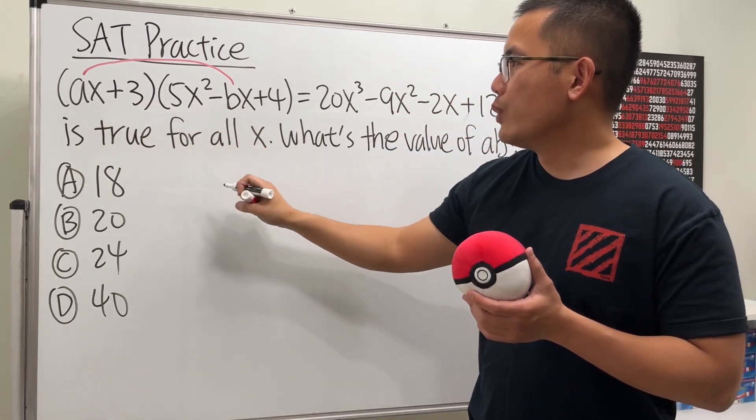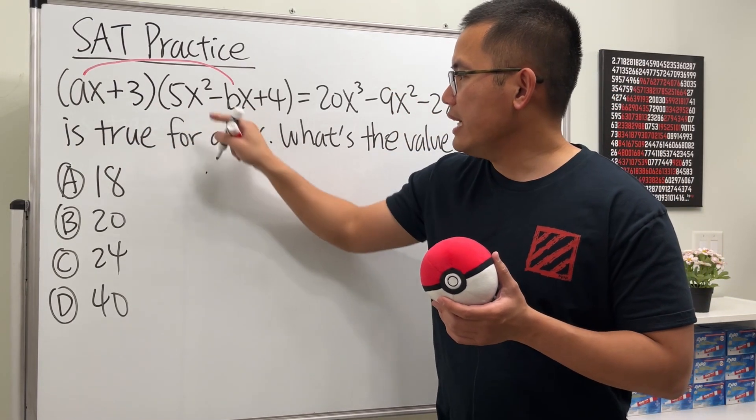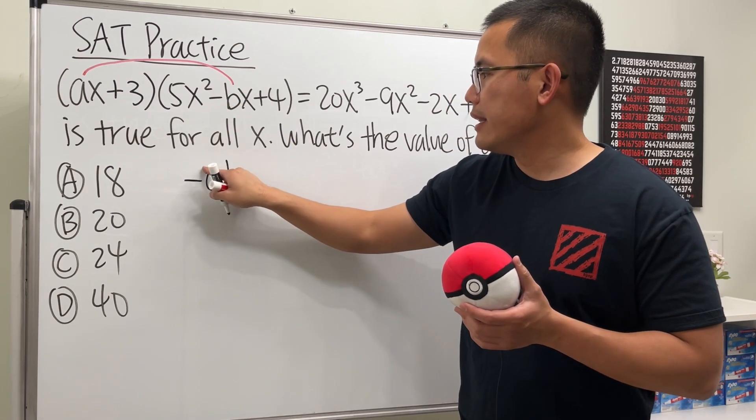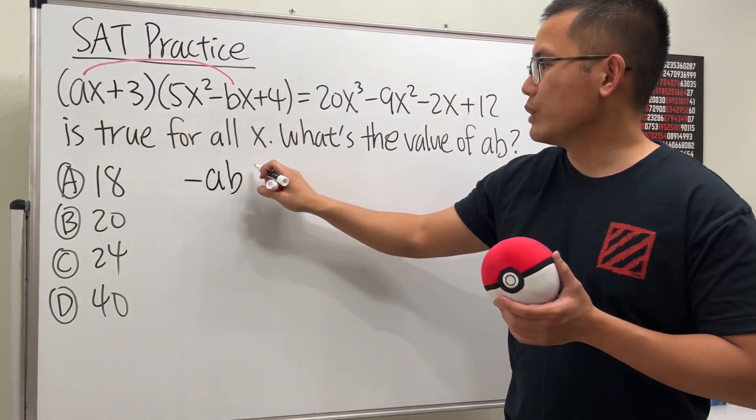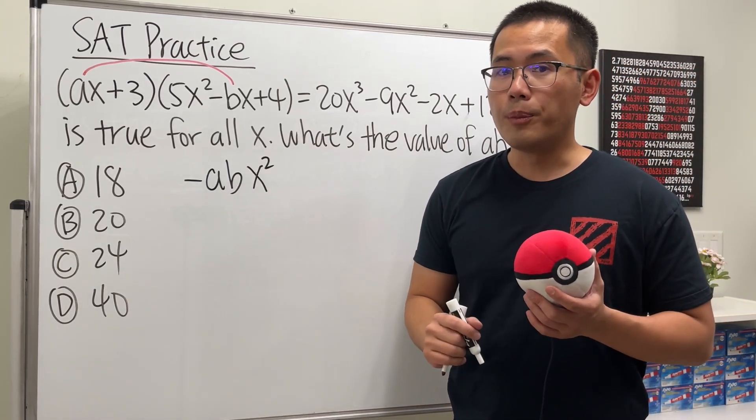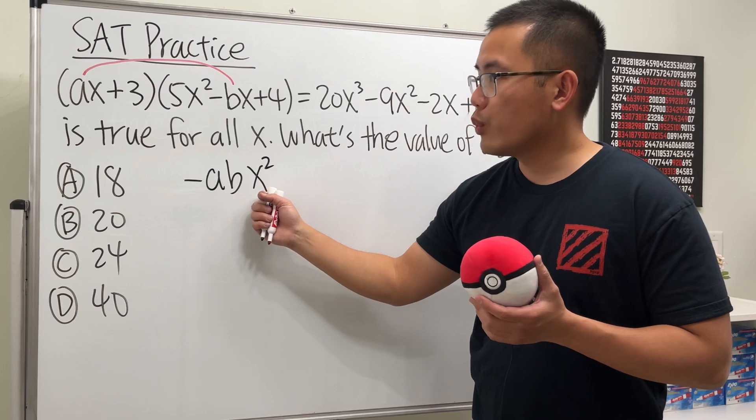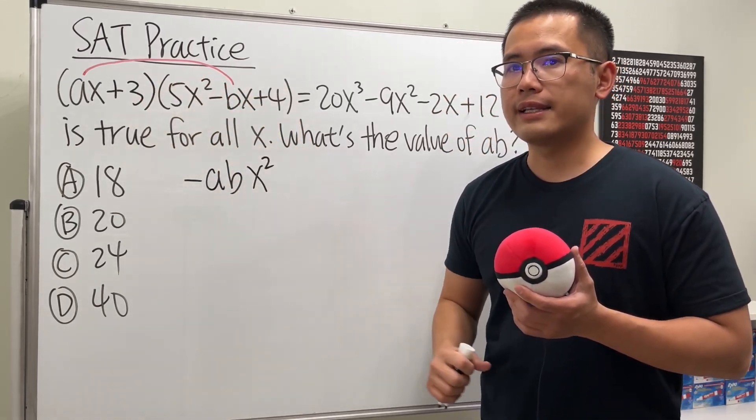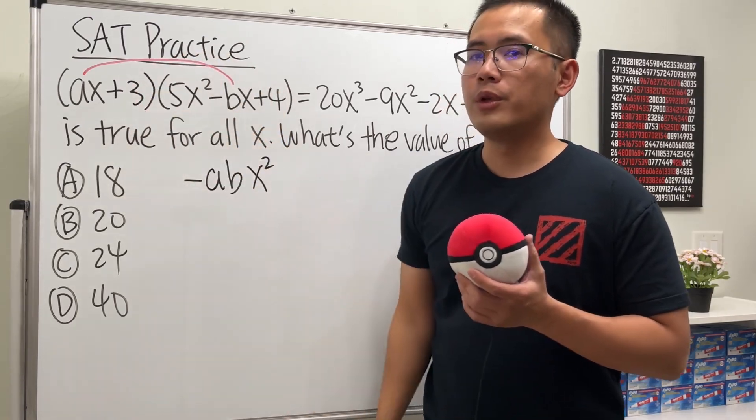And when we do this times that, we will get negative, and then a times b, and then we have x times x, so we have x squared, all right? But here's the thing. This is the technical part. We have the x squared term. We will also have to see what times 4 will give us x squared from this polynomial multiplication.